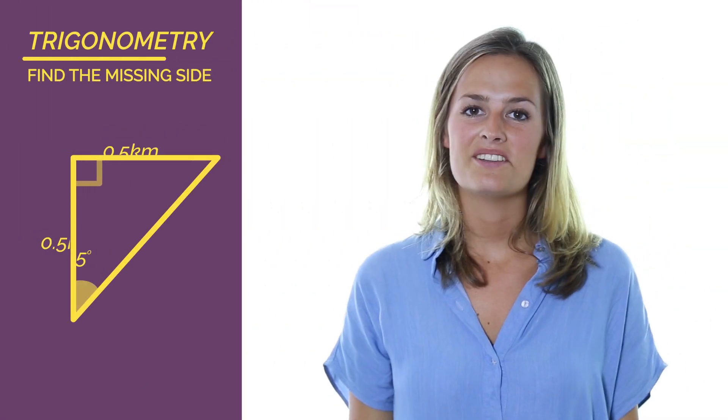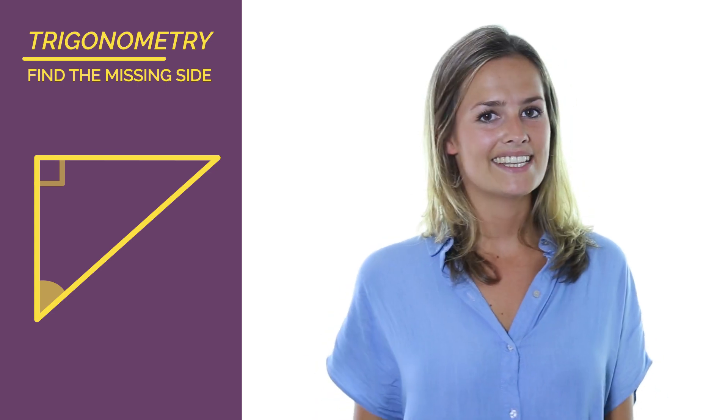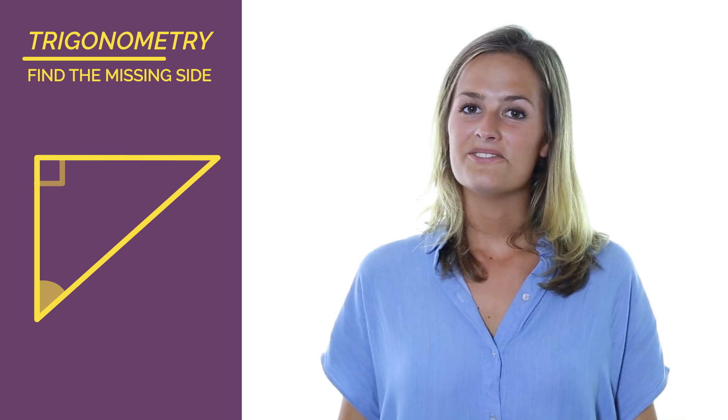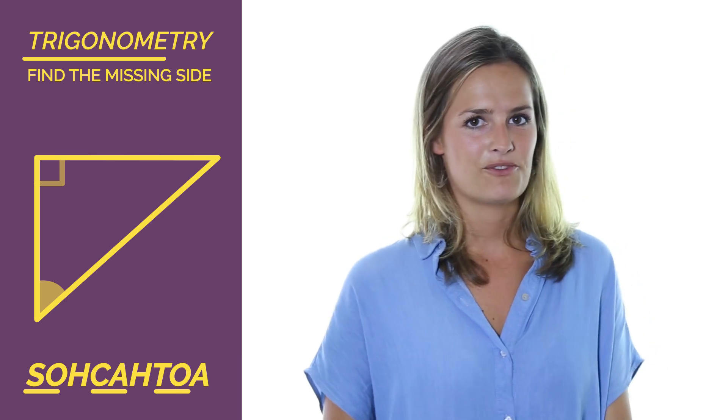From this video, you should be able to find the missing side of a triangle when you already have one side and an angle. You just need to use SOHCAHTOA and make sure you label the sides correctly before you start.